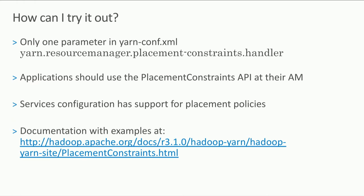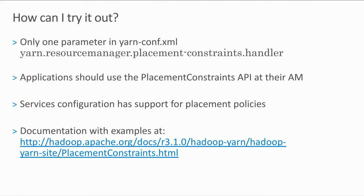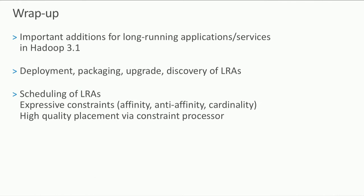To try this out, set one parameter in yarn-site.conf to enable the placement constraint processor, and applications use the new Placement Constraints API to specify constraints. In the services configuration, constraints can also be specified declaratively. Documentation with many examples is available at the provided link. To wrap up: Hadoop 3.1 adds important features for long-running applications — Wangda covered deployment, packaging, upgrade, and discovery; I covered scheduling with expressive constraints and high-quality placement via the constraint processor.